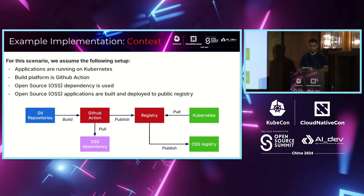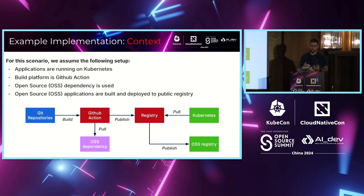Now let's dive into the practical side. We'll assume we're inside an organization with applications running on Kubernetes, building with GitHub Actions, using open source dependencies. Our packages use open source dependencies, and on the Kubernetes cluster we run open source solutions like Grafana, Prometheus, or other controllers. We also build and publish open source applications to the community.